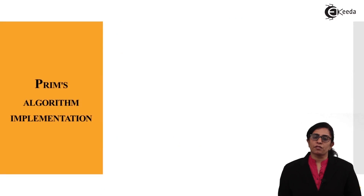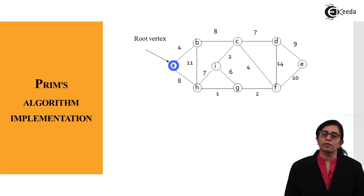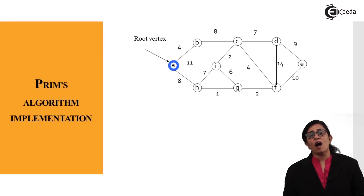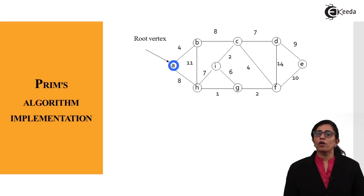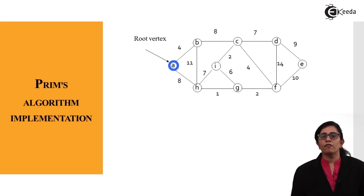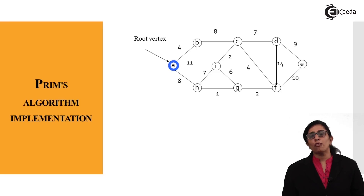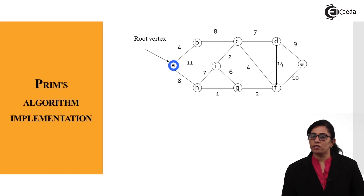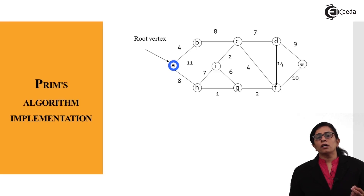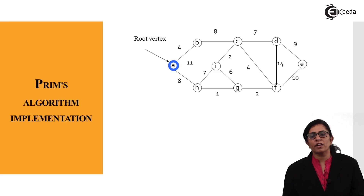Now let's implement Prim's algorithm with an example. We have an undirected weighted graph — Prim's algorithm cannot work on an unweighted graph; it works on an undirected weighted graph. For this graph we need to find the algorithm to move from source to destination, covering all vertices without forming a cycle, forming the shortest path to reach all edges and vertices. We can choose any vertex as the root vertex; here we consider A as the root vertex.